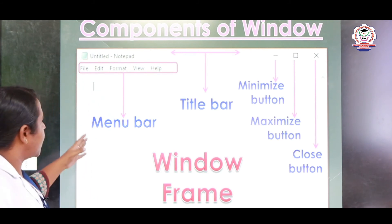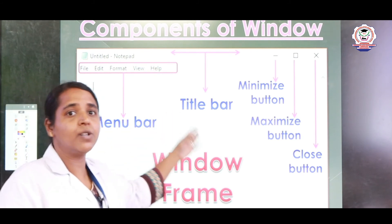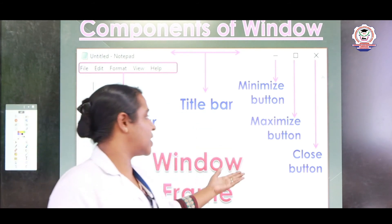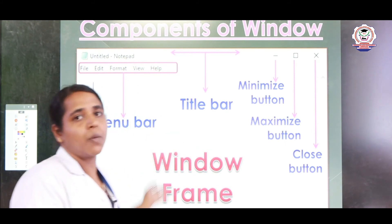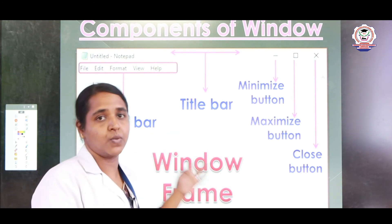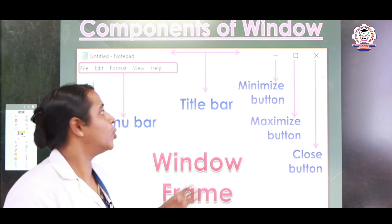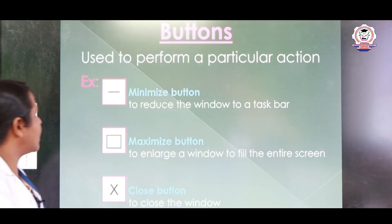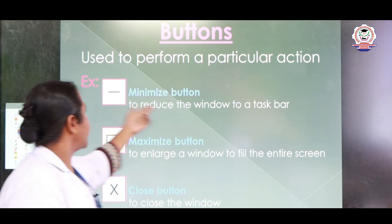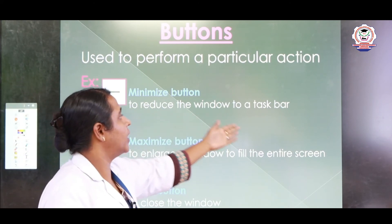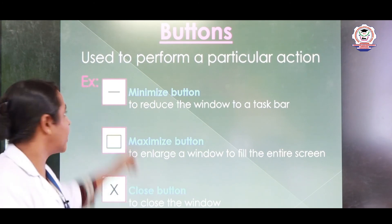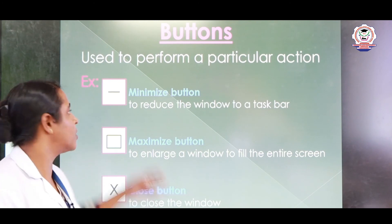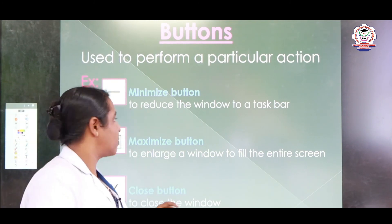So, we discussed the title bar — it includes the title of the window — then the menu bar, then minimizing, then maximizing, and close window. These are common for all windows, whatever application you open. The minimize button reduces the window to the taskbar. Whichever window you want to reduce, you click the minimize button.